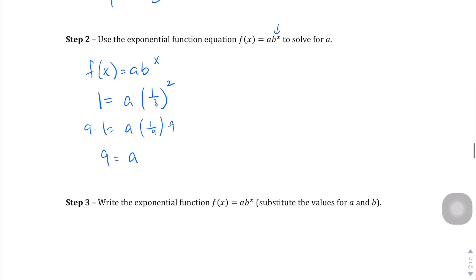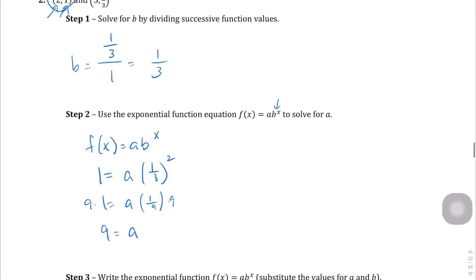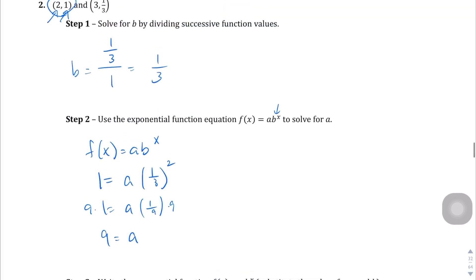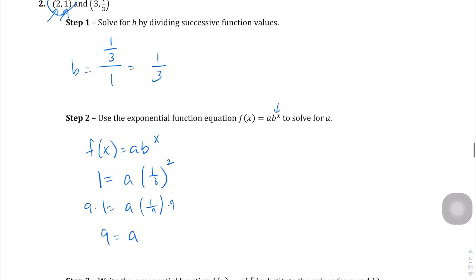And then if we write the exponential function, the function of x equals a, which is 9, times b, which is what? What did we find out of b? It was 1 third. 1 third to the power of x. So there is our exponential function that contains the points 2 comma 1 and 3 comma 1 third.